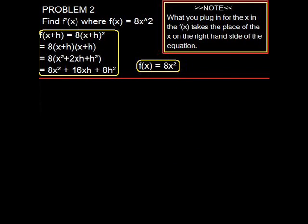Okay, let's move on to problem number 2. Find f'(x) where f(x) is equal to 8x². f(x+h) is equal to 8 times (x+h) times (x+h), which ends up coming to 8x² + 16xh + 8h².